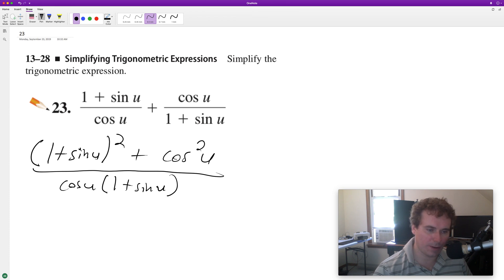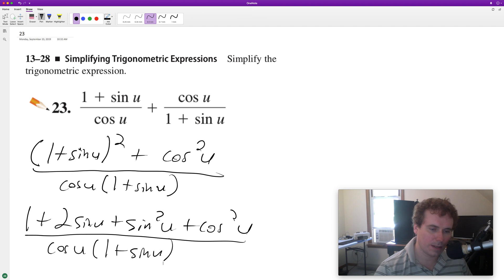Well, what will happen here is we'll go ahead and do this: 1 plus 2 sine u plus sine squared u plus cosine squared u, all over what we had here, cosine u times 1 plus sine u, okay